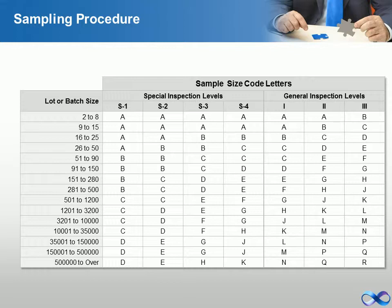Military Standard 105 was a United States defense standard that provided procedures and tables for sampling by attributes.